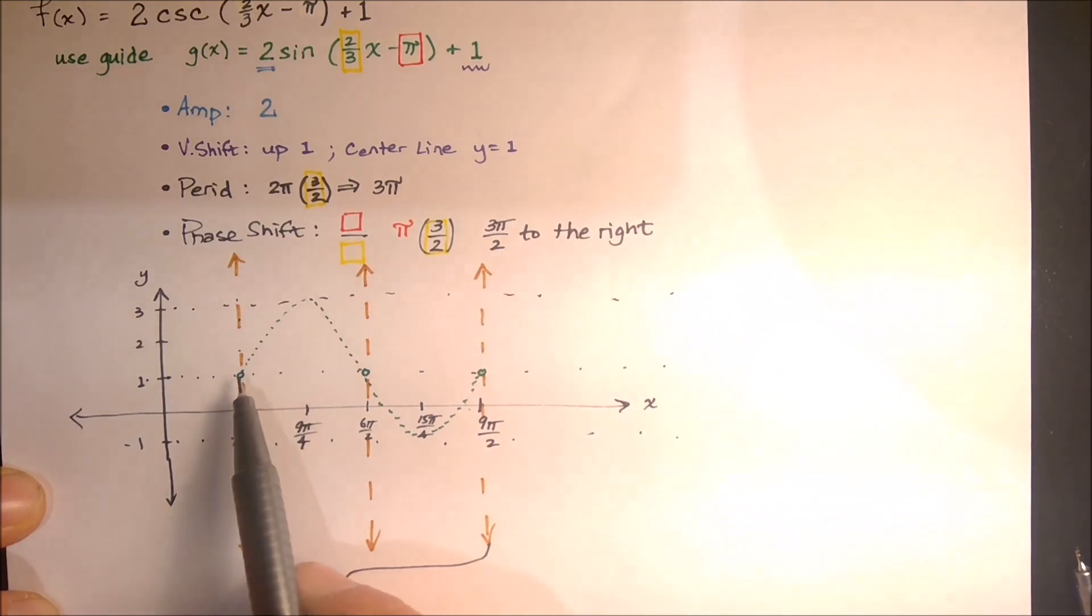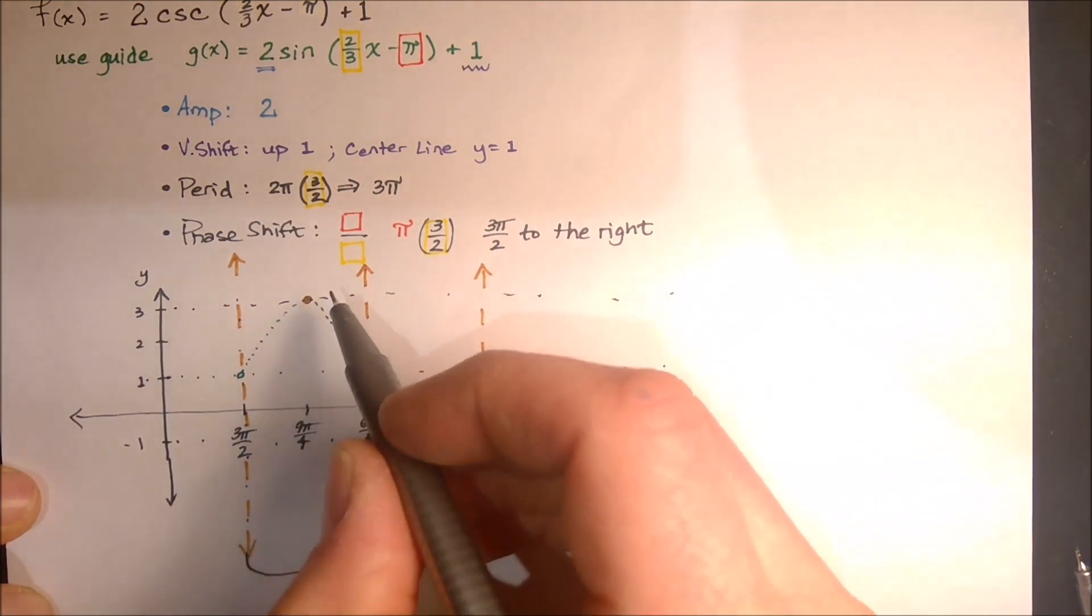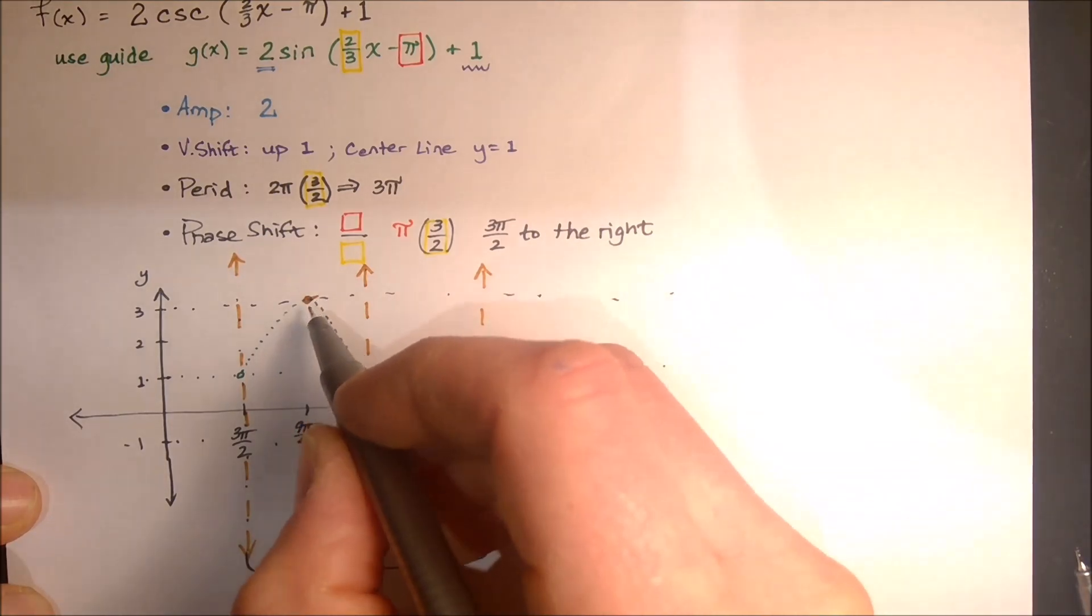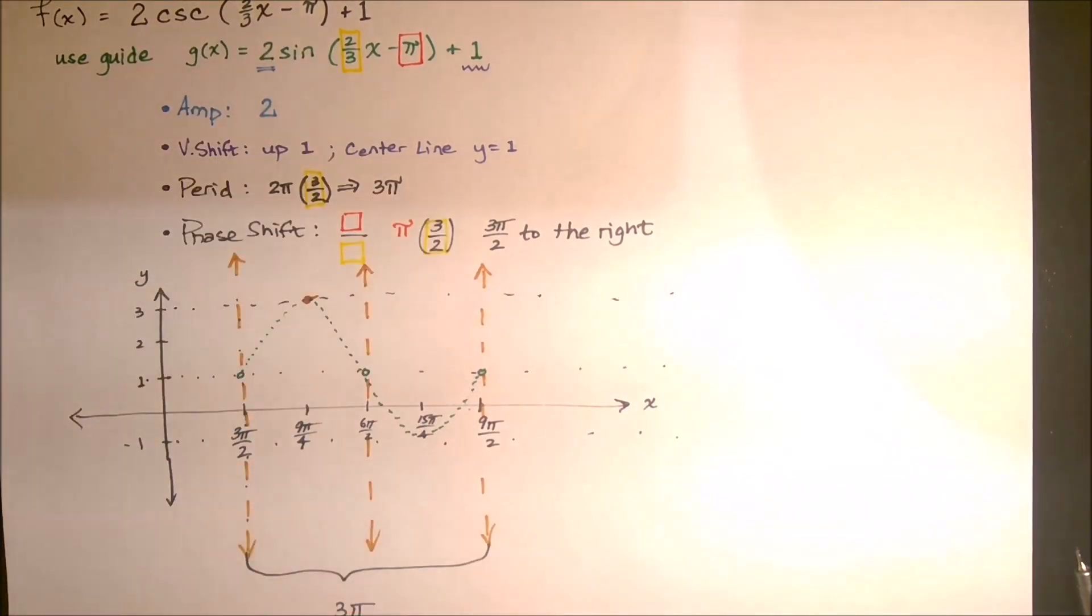The other thing to recognize, if we're at the maximum point of our function, think about the original sine function, the reciprocal is going to be the same. So if that were 1, the reciprocal of 1 is just 1, same thing down here.